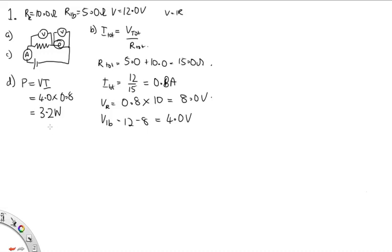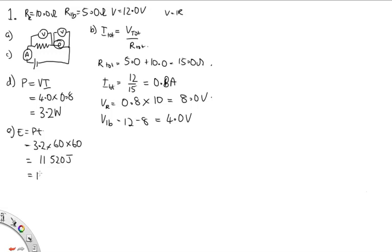Part E asks how much energy does the light bulb use in an hour. Energy is equal to power times time, so this is 3.2 watts times 60 times 60 seconds. Solving that gives us 11,520 joules, which is equal to 12 kilojoules to two significant figures.